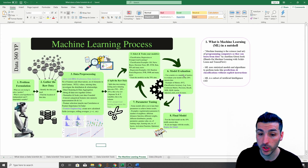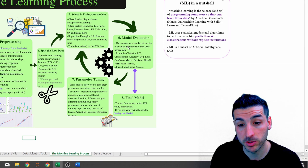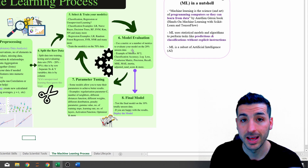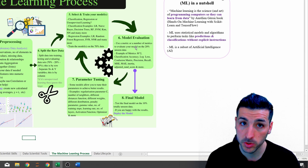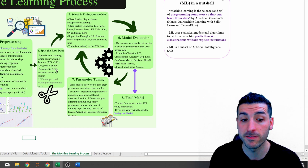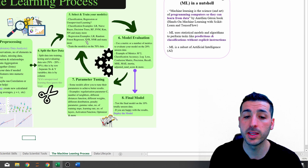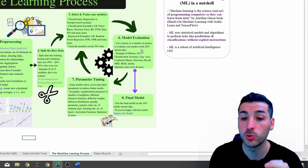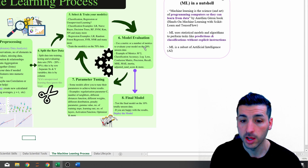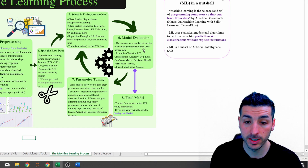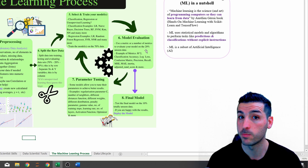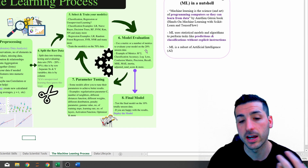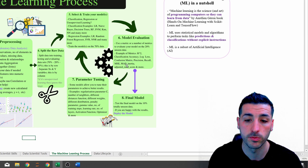The next step is to evaluate your model. You can use a number of different metrics, but the important thing is that you evaluate on that 20% unseen data you held out. You've trained on 70%, and now you ask the model to make predictions on only the 20% unseen data and compare its predictions to the actuals. Example metrics include R-squared, classification accuracy, log loss, confusion matrix, precision, recall, and more.